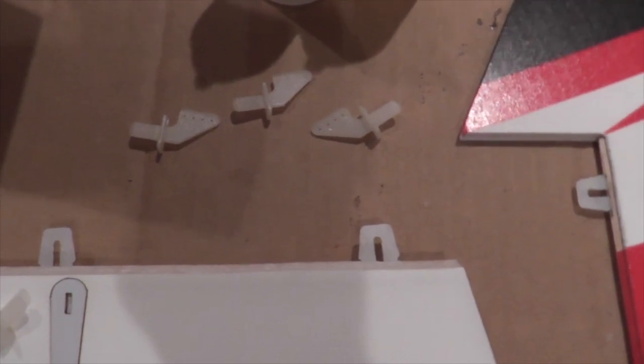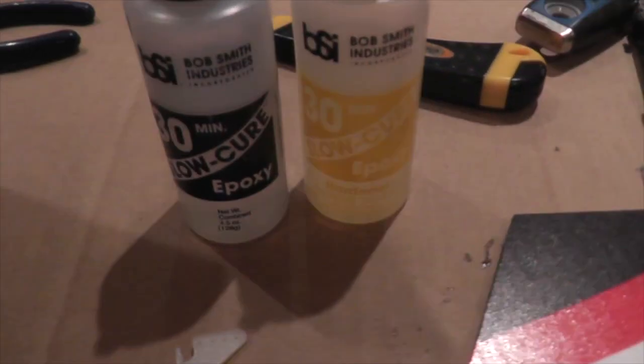Next, we'll go ahead and install the control horns on the elevator, rudder, and aileron. I'm going to use 30-minute epoxy. The elevator and rudder both have a little plate on the back here.